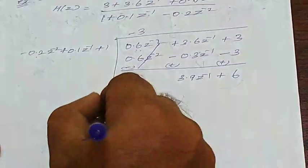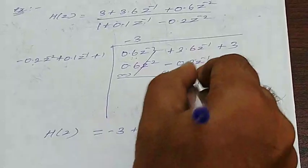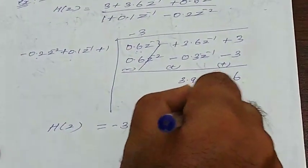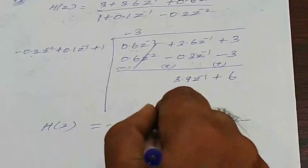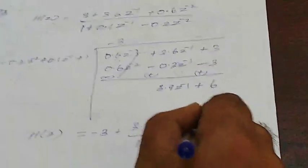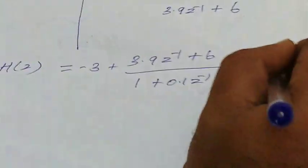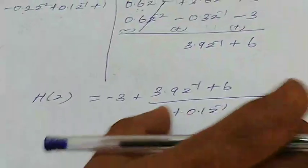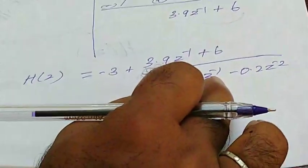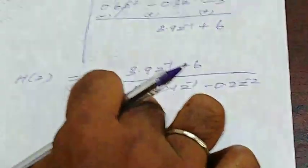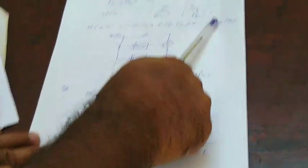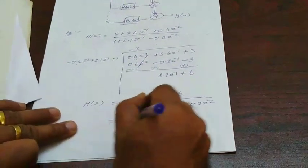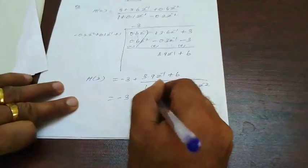Now this is otherwise written as: our quotient is minus 3 and the remainder is 3.9 z inverse plus 6 divided by 1 plus 0.1 z inverse minus 0.2 z power minus 2. Now we are having a constant and you are having another one function. Here the denominator is a quadratic equation. Therefore, if you are finding the roots of this equation means we will get this format, some constant divided by 1 minus pk z inverse. Here apply partial fraction, find the roots and apply partial fraction.